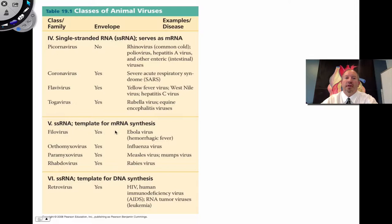There is single-stranded RNA that acts as a template for messenger RNA synthesis — great examples here are Ebola itself and influenza virus. And then there is single-stranded RNA which acts as a retrovirus because it sort of goes in reverse and copies itself into DNA. HIV is infamous for being a retrovirus.